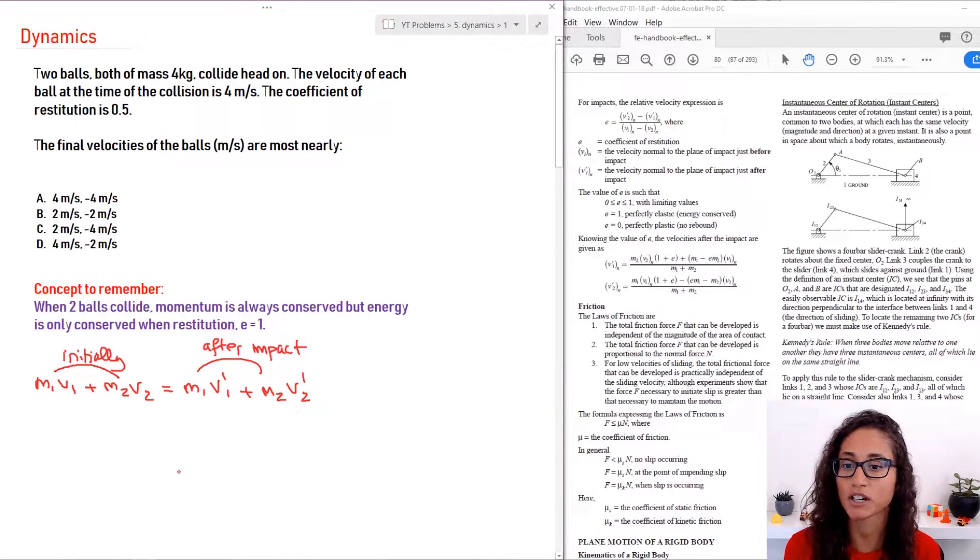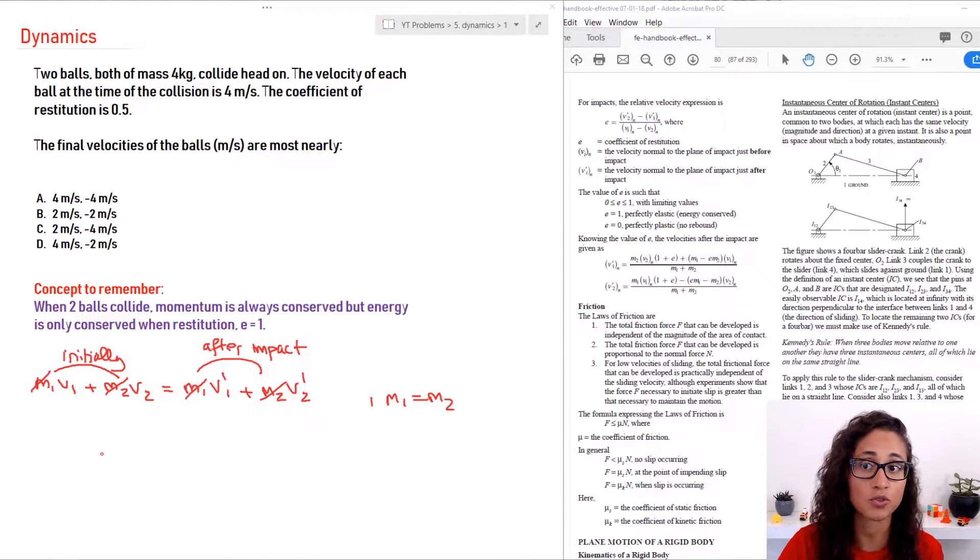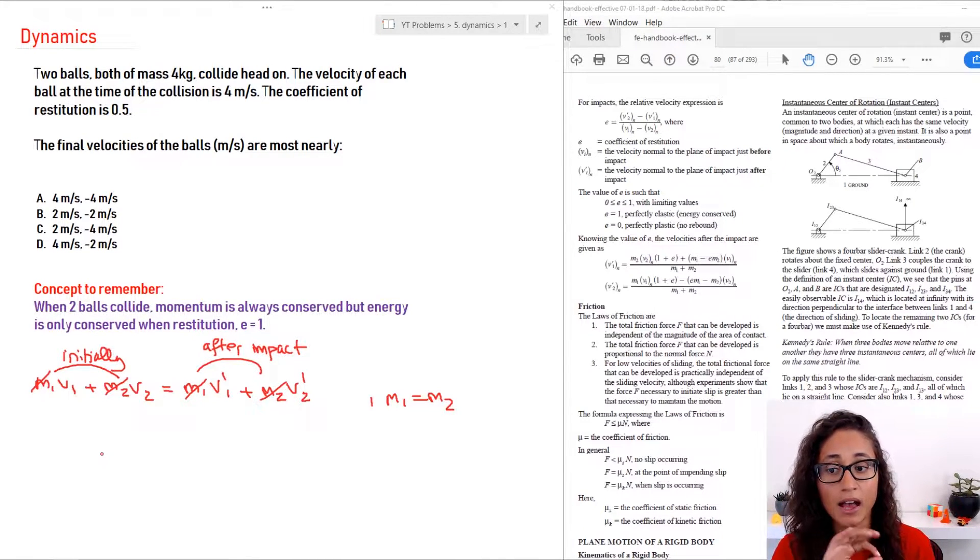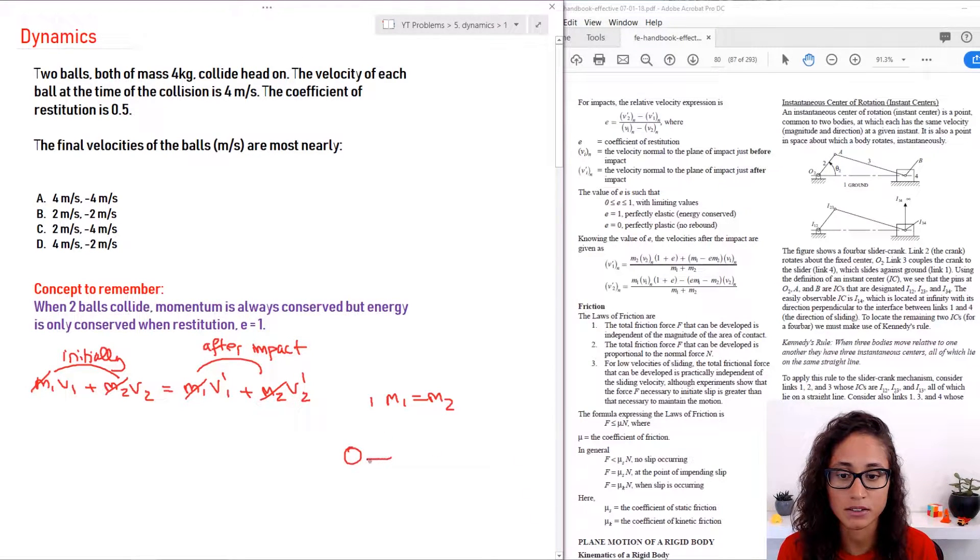Okay, so this is the equation. As I mentioned, this is initially, this is after the impact. So the mass, mass one and mass two are both equal. They're just going to cancel since they're both four kilograms. The next thing is, let's start substituting. Note that we were given the initial velocity of the two balls. They both were moving at four meters per second. But you got to be careful, because if these balls are actually going to collide, they can't both be going four meters per second and then collide.